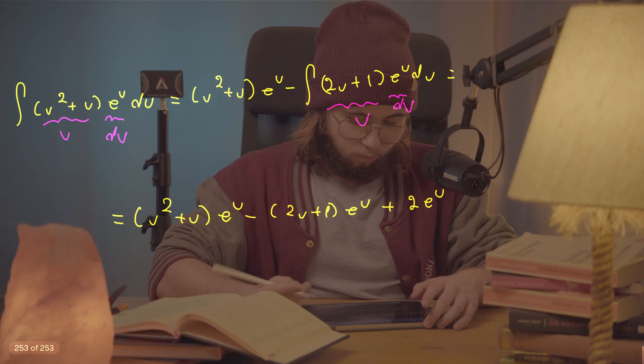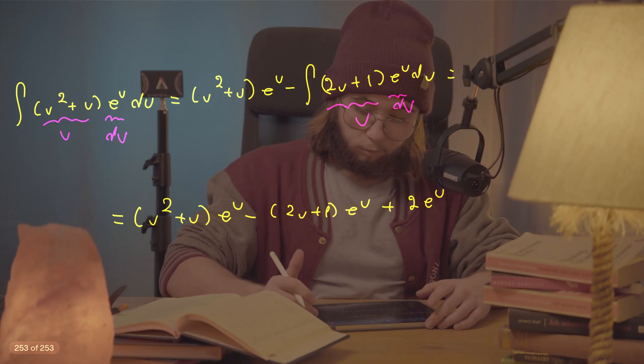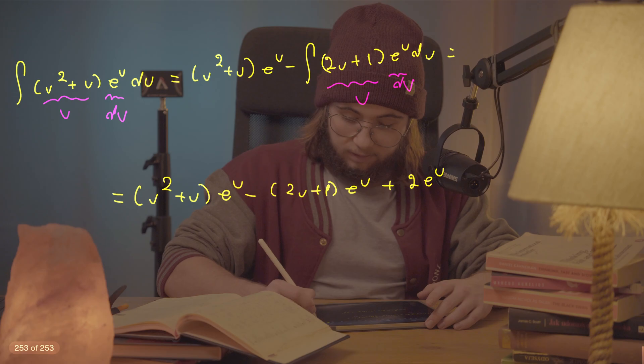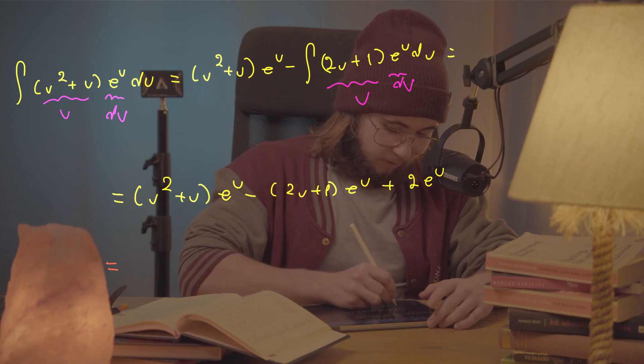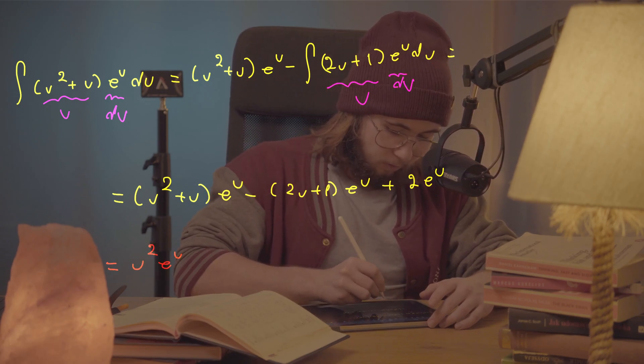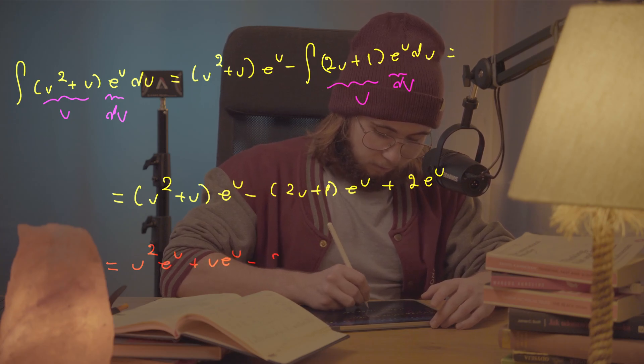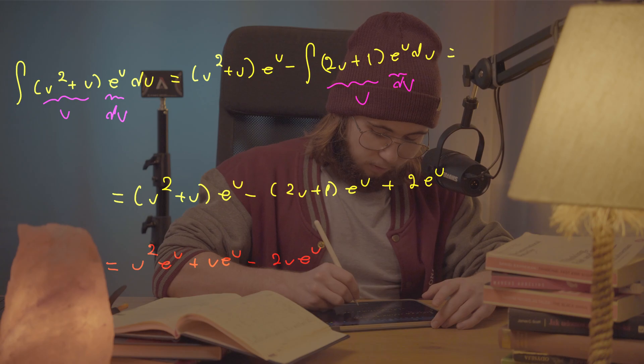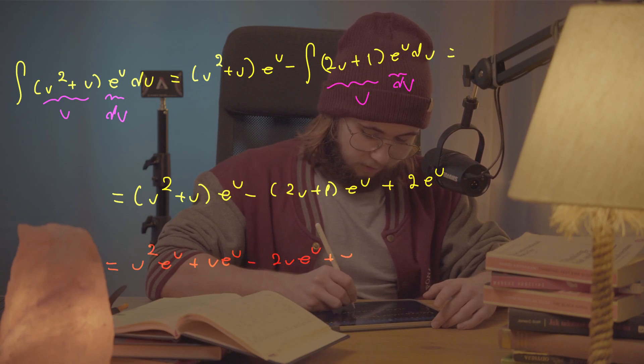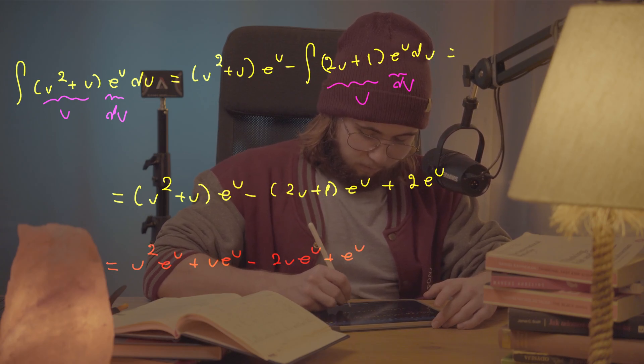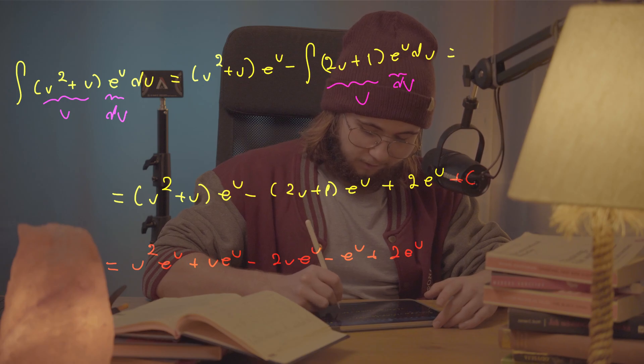And so now I can just go on and multiply all of that stuff out. What I'm gonna get after doing that is first of all, u squared e to the u, then u e to the u, then minus two times u e to the u, and then plus e to the u, negative e to the u, and then plus two e to the u. And I forgot the plus c here.